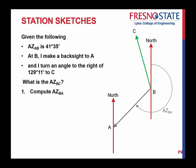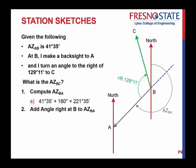The first thing we need to do is compute our azimuth from B to A. From A to B we have a forward azimuth of 41 degrees, 35 minutes. From B to A we have a back azimuth, so you just add 180 degrees. Now we know the azimuth from B to A is 221 degrees, 35 minutes. Next we add the angle right at B to our azimuth of B to A: 221 degrees, 35 minutes plus 129 degrees, 11 minutes gives us 350 degrees, 46 minutes.